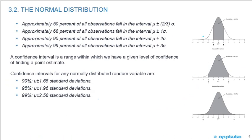Okay, so when we have a distribution that's normal, approximately 68% of all the observations are going to fall within the interval, the μ, which is the mean, plus or minus one standard deviation.